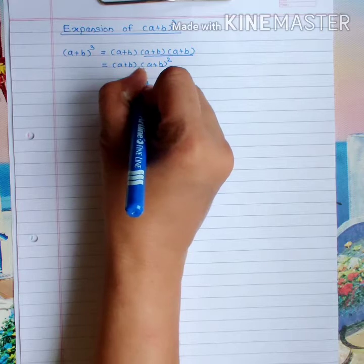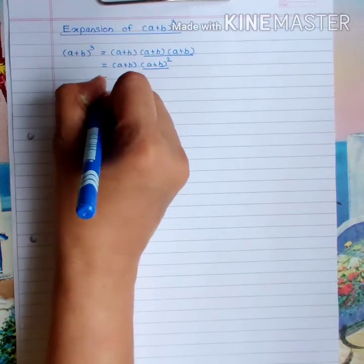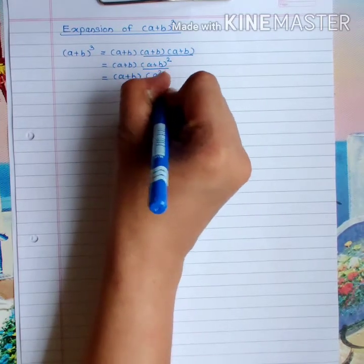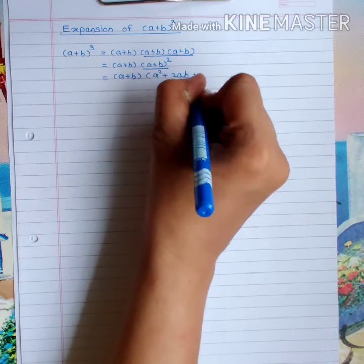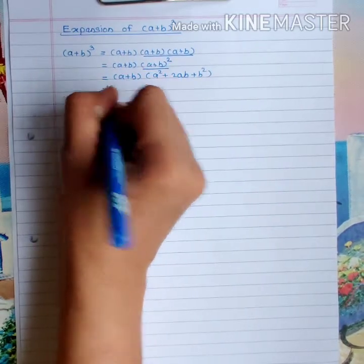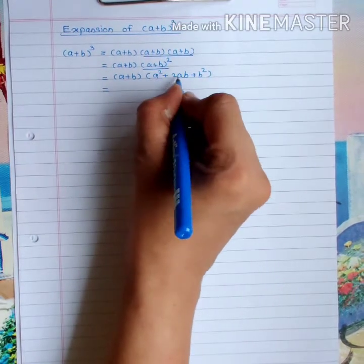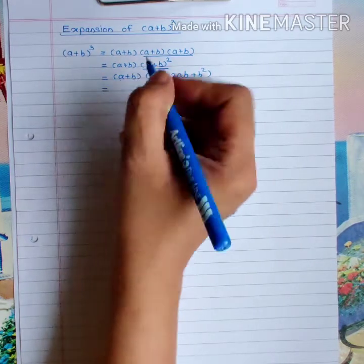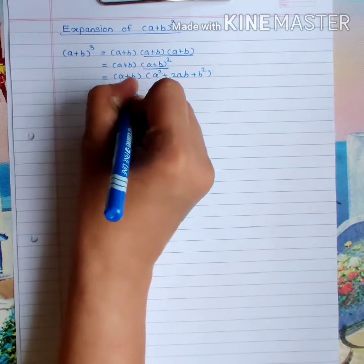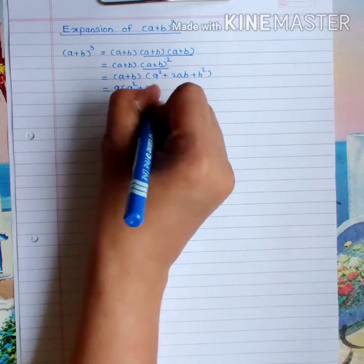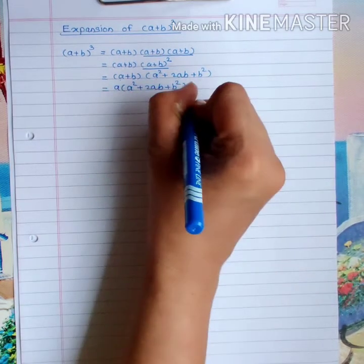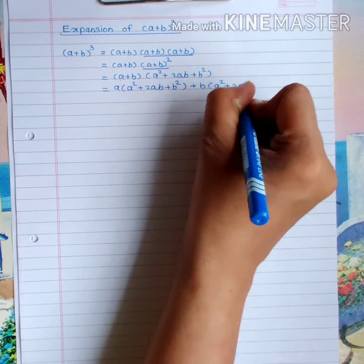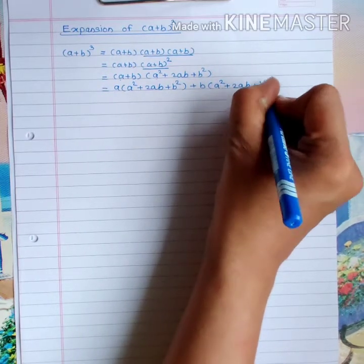We know the expansion formula for (a+b)² — that is equal to a² + 2ab + b². Now we will multiply both brackets: each term of the second bracket by each term of the first bracket. So: a(a² + 2ab + b²) + b(a² + 2ab + b²).